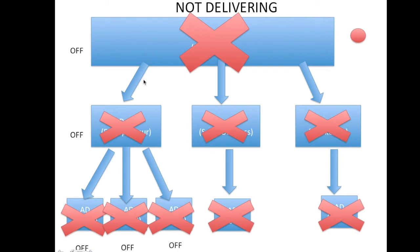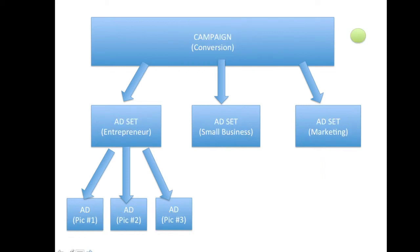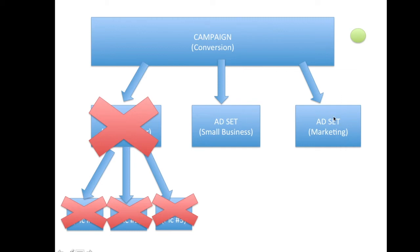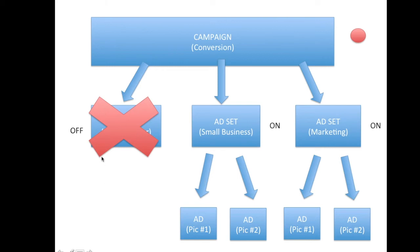What happens if you just turn off one ad set? In this scenario your campaign is on — green light — but if you turn off one ad set, everything from that ad set down is going to turn off. Those ads turn off because they're part of that ad set. However, the other ad sets can still run. The ads associated with the active ad sets are still being delivered — only the branch flowing from the turned-off ad set goes dark.